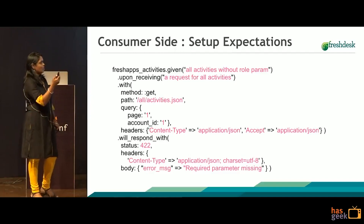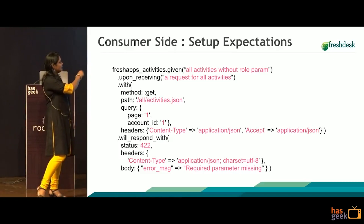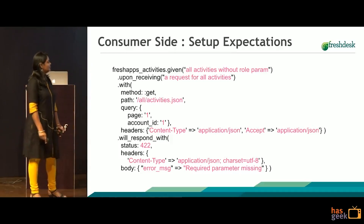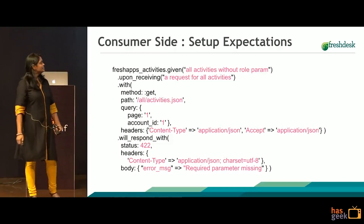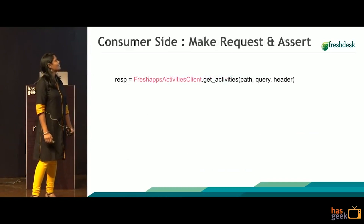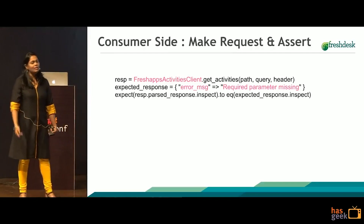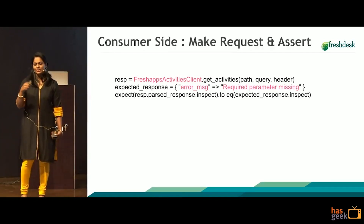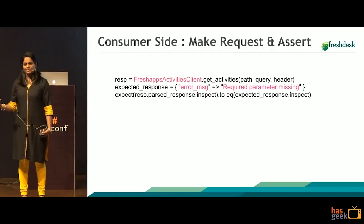This is what we set in the mock provider — if it gets such a request, then it has to respond with the response that we see here, which is status 422 and the header and body with the specific error message. This is the snippet to actually make the call, and when this call is made, the request is triggered to the mock provider and gets recorded to the PACT file.